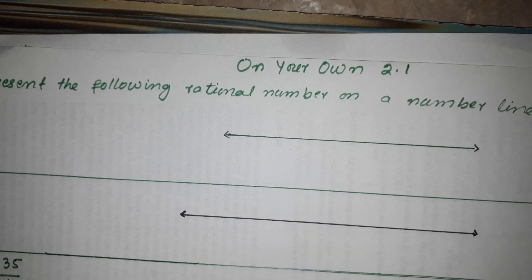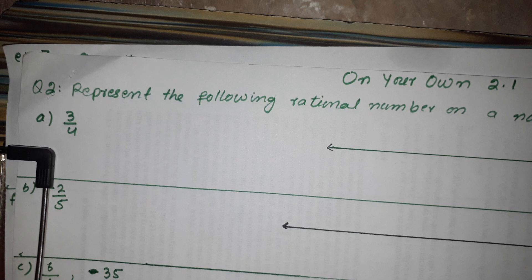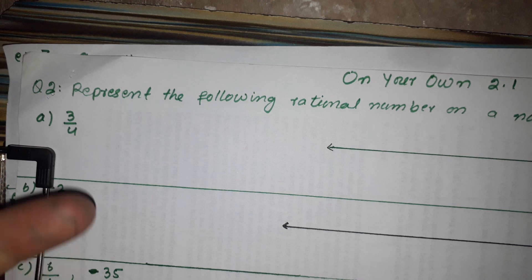Bismillahirrahmanirrahim. In the exercise 2.1, question number 2, start to do. Represent the following rational numbers on the number line. This is for 6th class. Numbers represent whole numbers and the integers represent rational numbers on the number line.